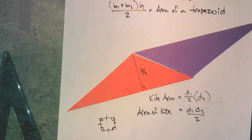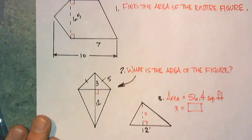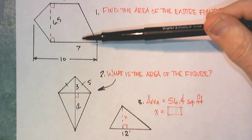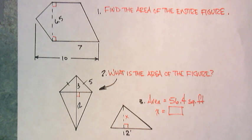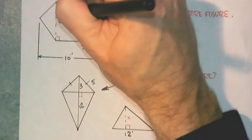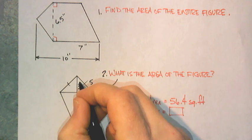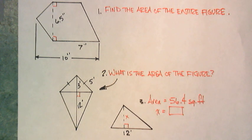Now here are three practice problems. First, find the area of a shape with a side of 7 inches, a side of 5 inches, a perpendicular segment of 6.5 inches, and a total length of 10 inches. Second, find the area of a shape using feet as units. Third, a triangle has a 12-foot base and an area of 56.4 square feet — find x.